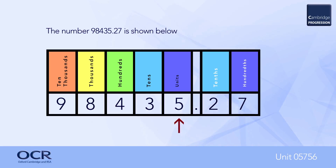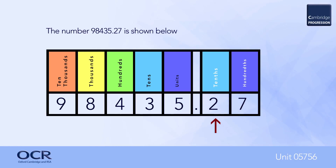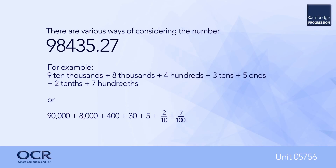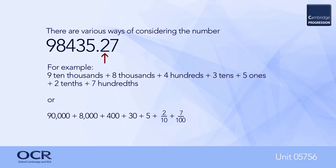Column headings show that there are five units, or five ones; three tens; four hundreds; eight thousands; nine ten-thousands; and after the decimal point, there are two tenths and seven hundredths. Here we can see different ways of expressing this number. For example: nine ten-thousands plus eight thousands plus four hundreds plus three tens plus five ones, plus two tenths, plus seven hundredths.